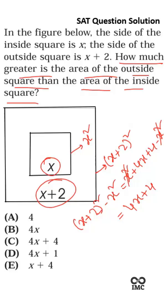After cancelling x squared and x squared, we will get 4x plus 4. So the area of the largest square is 4x plus 4 greater than the area of the smaller square. The answer is 4x plus 4.